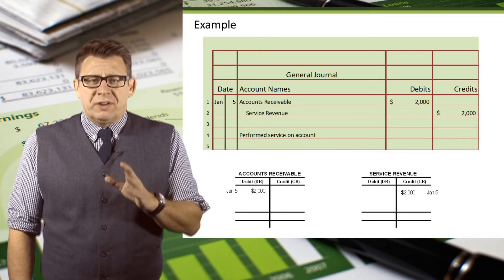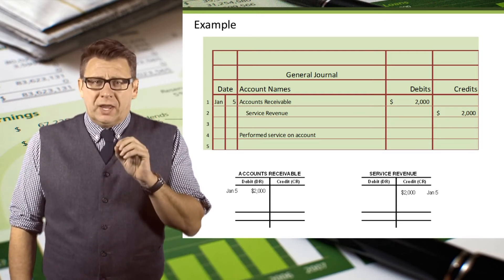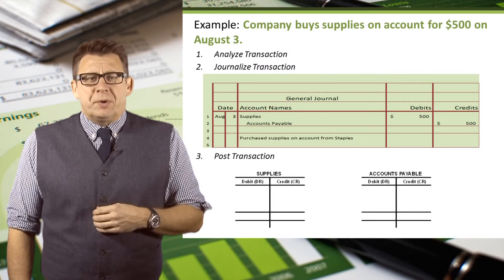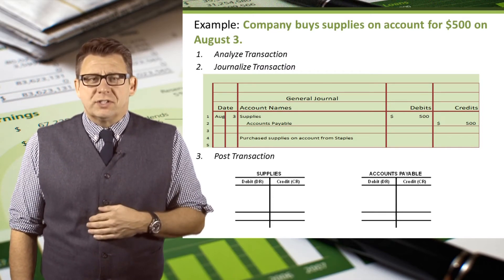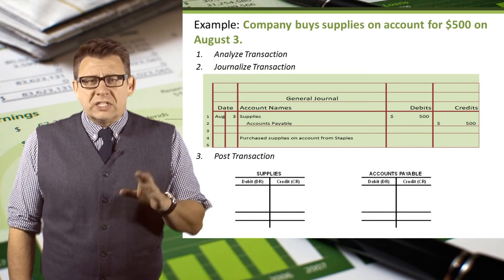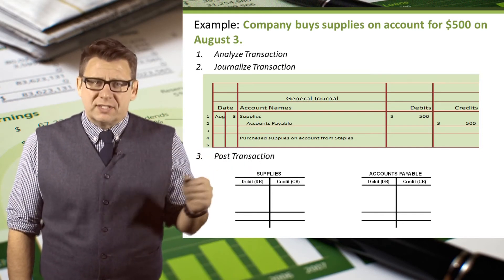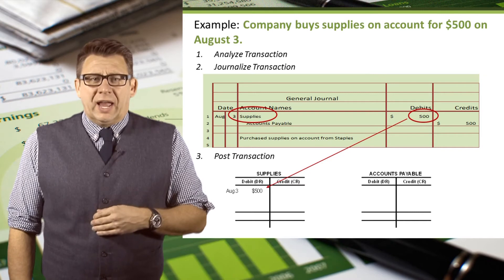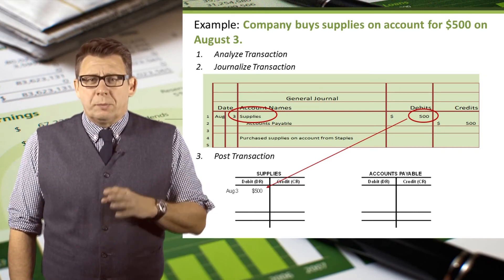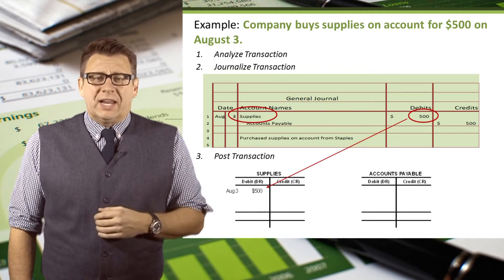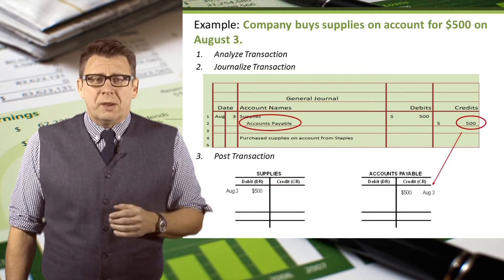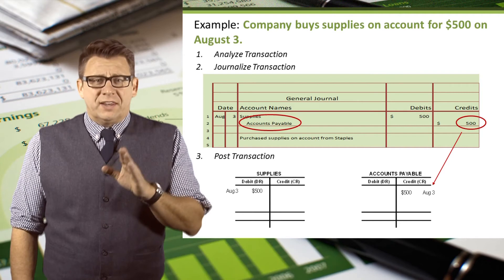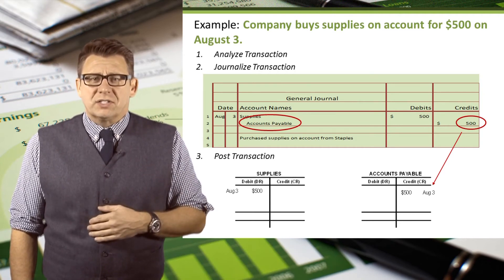Let's look at the three previous examples and put this step in context of the accounting cycle. In this example, a company bought supplies for $500 on account. The date was August 3rd. So we analyzed the transaction and journalized it. Now we need to post this to the ledger. Supplies is the debit account and the amount is $500, so we post $500 and the date to the debit side of the supplies account. Accounts payable is the credit account and the amount is also $500, so we post $500 and the date to the credit side of the accounts payable account.